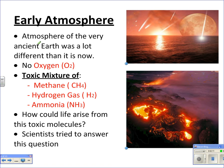Even if I could go back 4 billion years ago, I wouldn't want to step outside. There's no oxygen. The atmosphere of this very ancient Earth is so different than it is now — absolutely no oxygen, just a toxic mixture of methane, hydrogen gas, and ammonia. So you've got to be asking yourself: how could life arise out of this toxic mess?